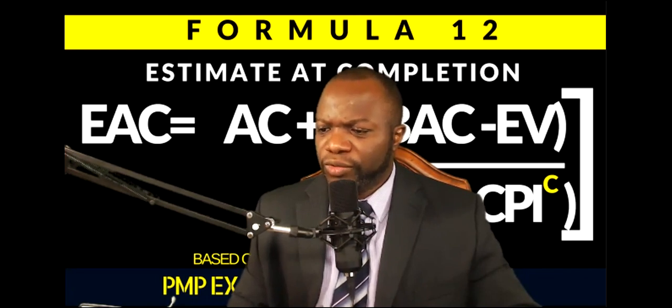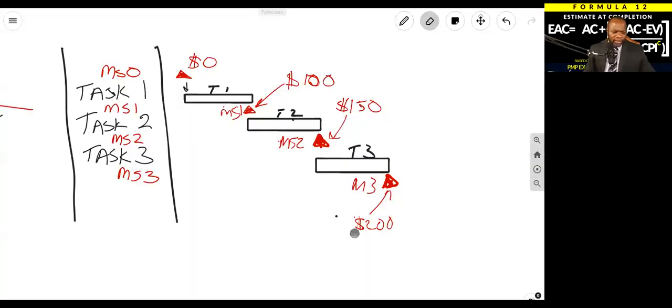You do recall this. This was the example I gave you. Now, using milestones, just milestones, which we called milestone weights, we weighed this at $100, $150, $200.